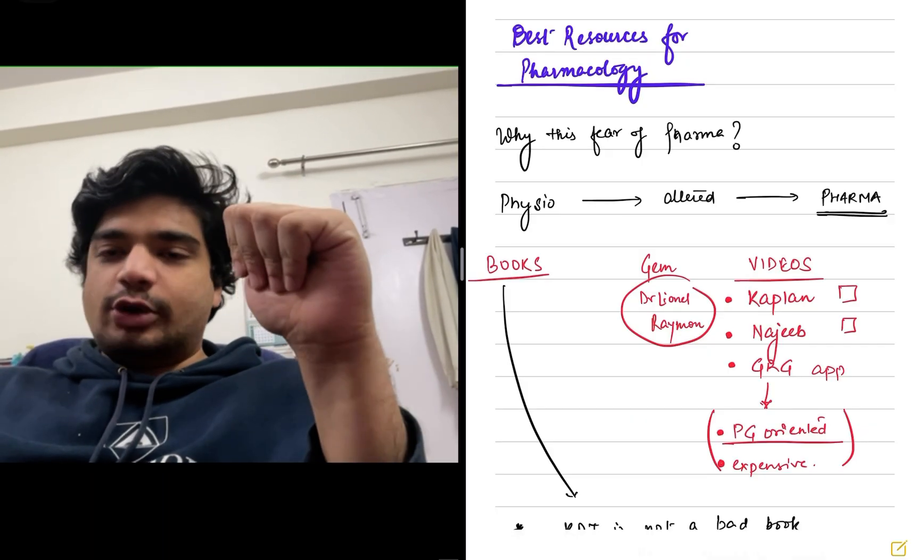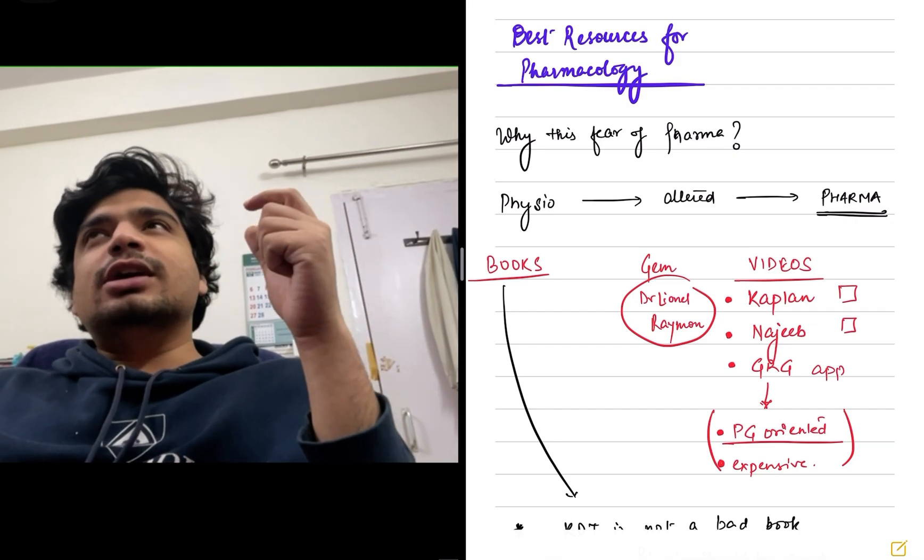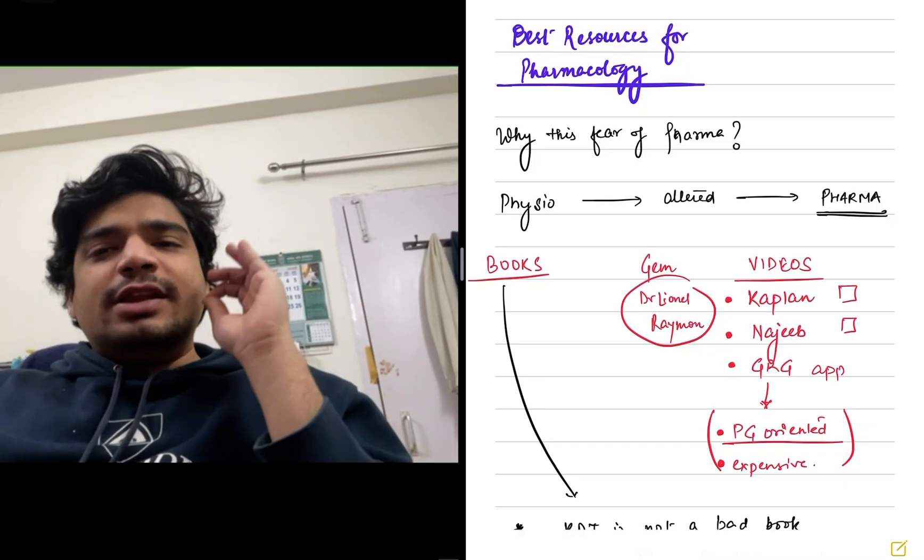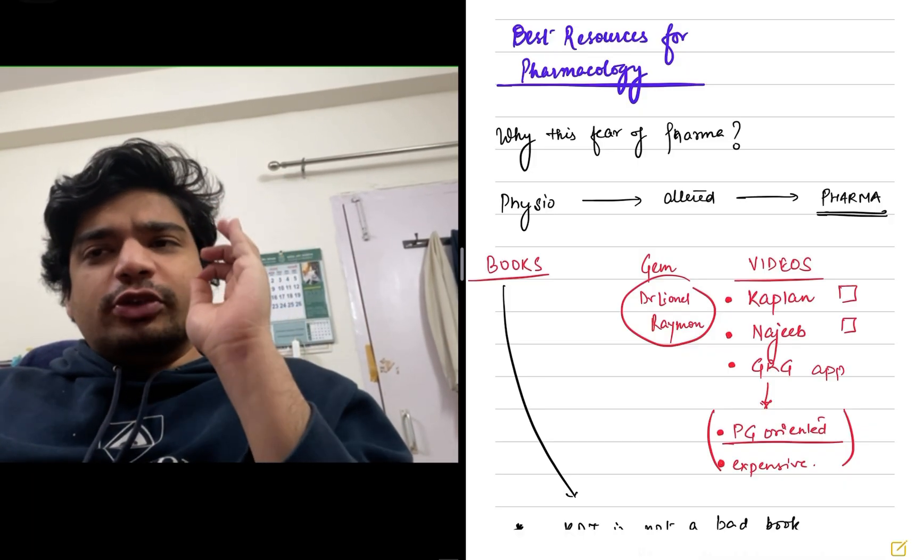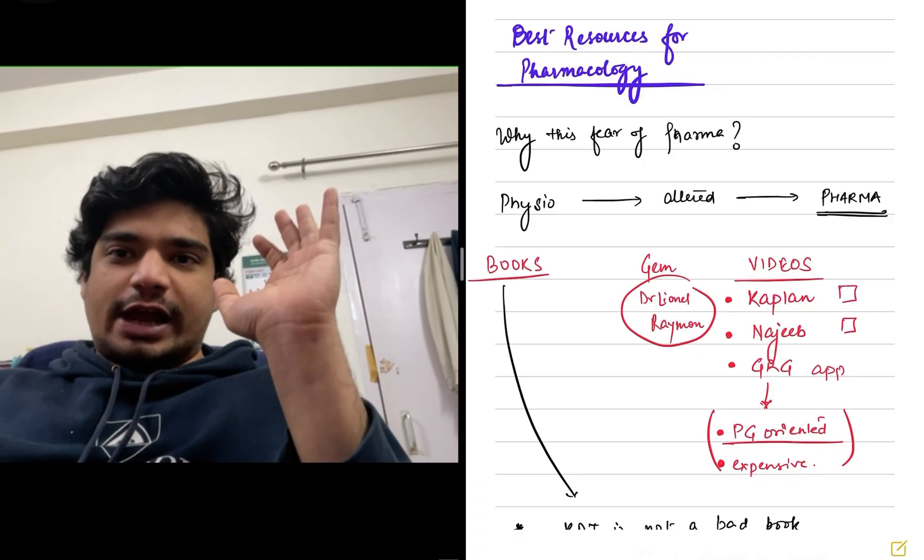The second resource I might say is Najeeb, Dr. Najeeb. His videos are good, I'm not going to say they're not good. But what happens is that they tend to be a bit long, you have to watch at 2x. Kaplan is like perfect length. Almost what you require is given in Kaplan. The last I'll say is you can consider buying the GRG app.